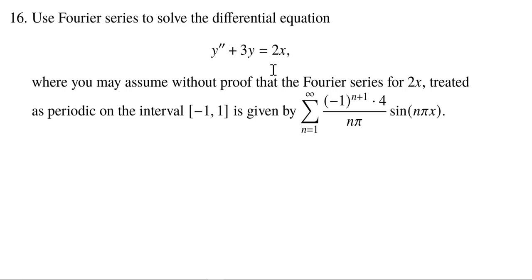It's not as nice as the previous problem where we treat it as a 2π periodic function, which makes the formulas a little bit simpler. Instead, we've been given it as a 2 periodic function, so that means the period is 2 on the interval negative 1 to 1. And so, we're going to assume that our y also has a Fourier series, which is 2 periodic on the interval negative 1 to 1.